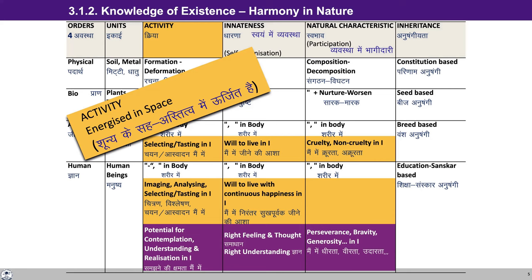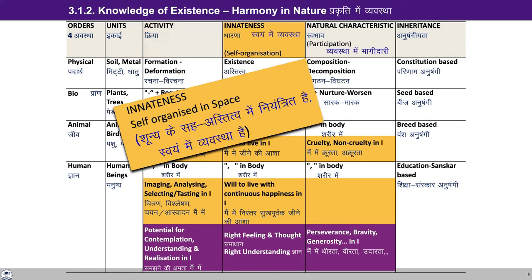We studied about every unit — that every unit is energized, self-organized, and recognizing its relationship with other units and fulfilling it. This activity is an expression of being energized in space, and by virtue of that, there is formation and deformation in the physical order, and so many activities are there in the bio order, animal order, and human order. The innateness — that is the self-organization — is basically an expression of every unit being self-organized in space, which we term as innateness. And we studied about the innateness of every order: the physical order, bio order, animal order, and human order.